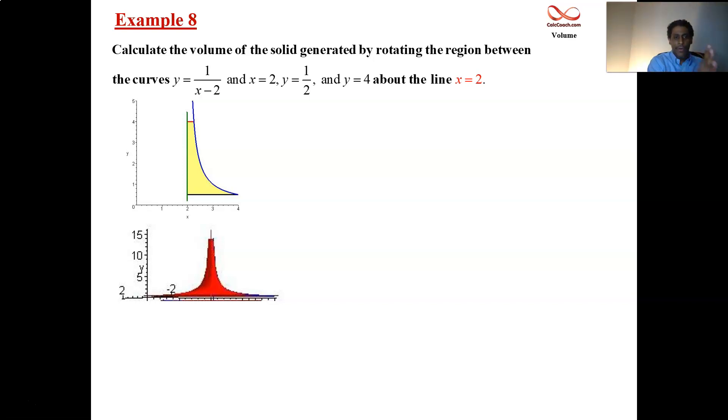And so then the yellow area is this region that we're going to be rotating. Now notice we are rotating it about the line x equals 2. The region is flush up against that. There's no gap there. When you go to rotate that, it'll look much like a horn, solid disk. So it's a disk method.